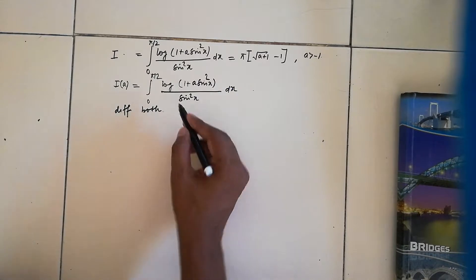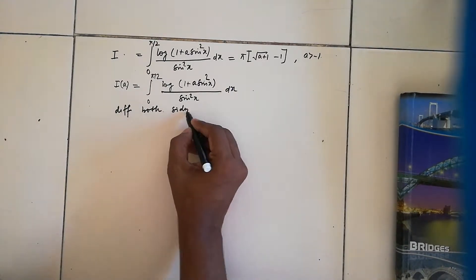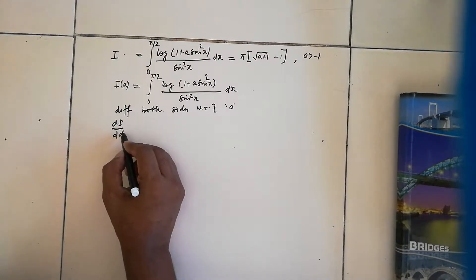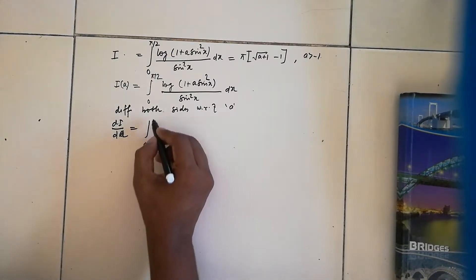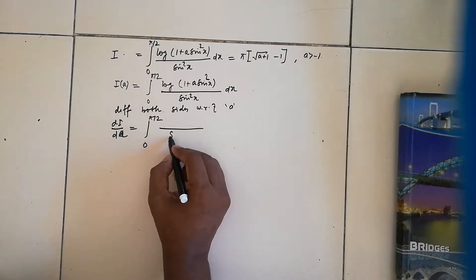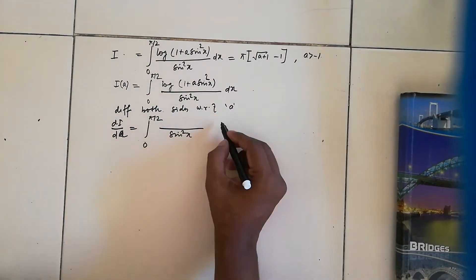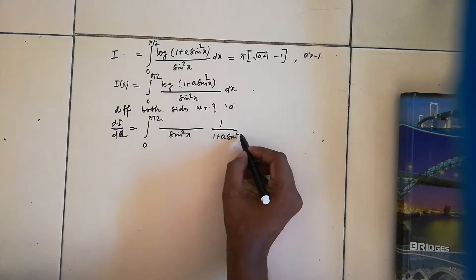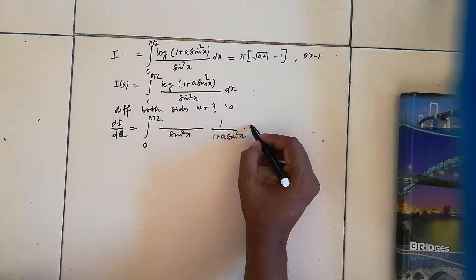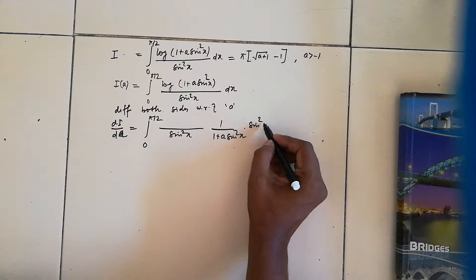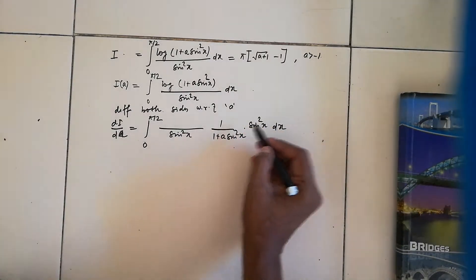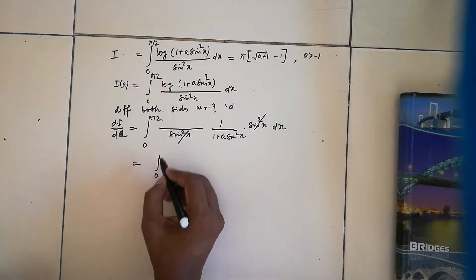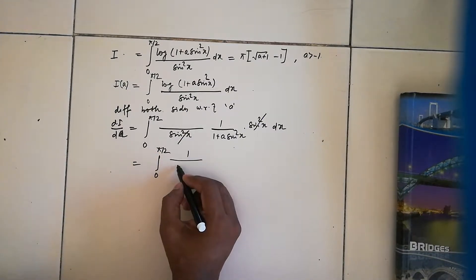Now differentiating both sides partially with respect to a, treating x as constant, dI/da becomes the integral from 0 to pi/2. The differentiation of log(1 + a·sin²x) gives 1/(1 + a·sin²x), multiplied by sin²x. The sin²x terms cancel, leaving the integral from 0 to pi/2 of 1/(1 + a·sin²x) dx.